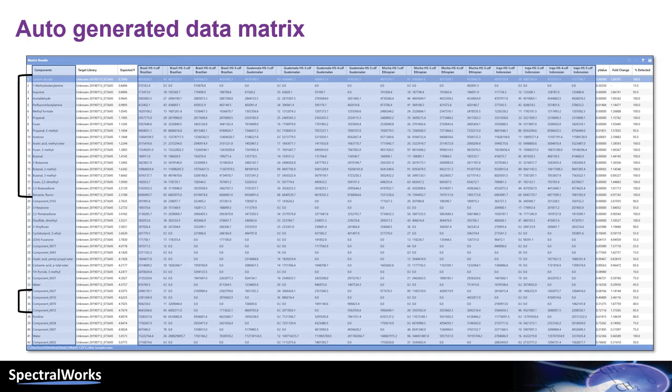This matrix was automatically generated, but it is also possible to generate a matrix from existing target libraries and this is useful when looking for differences in specific components. The processing in this case used retention time matching, but retention indices should have also been used.